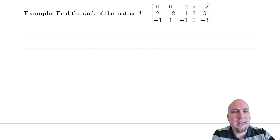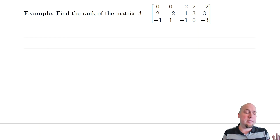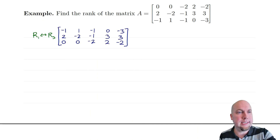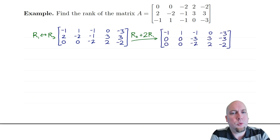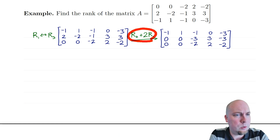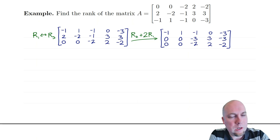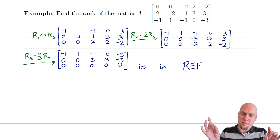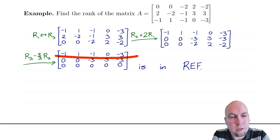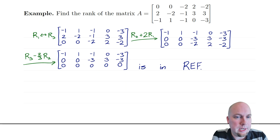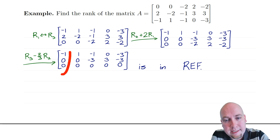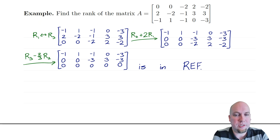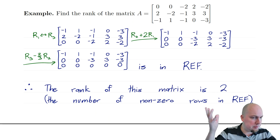Let's compute the rank of an example matrix. First, get it into row echelon form. I want a leading entry at the top left, so swap row one and row three to get a non-zero entry there. Then do a row operation to get a zero below it. The next leading entry is in the second row; do one more row operation to zero out the things below it — now we're in row echelon form. To find the rank: method one, count the non-zero rows — I see two non-zero rows, so rank is two. Method two, count the leading entries or leading columns — I see two leading columns, so rank is two. Either way, rank is two.